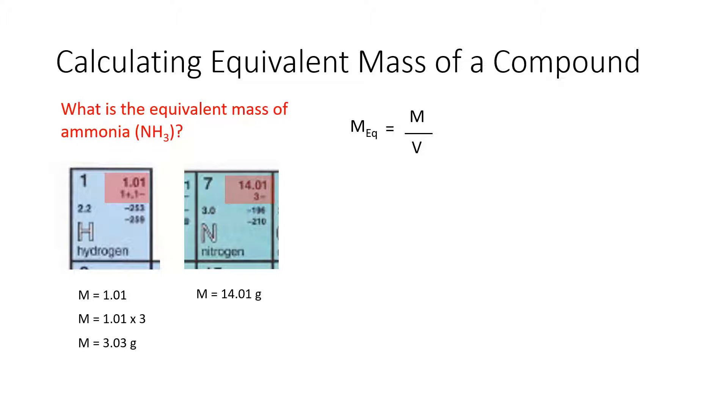What we then do is we go to our equation and we find the mass of one equivalent by taking the molar mass of the compound and dividing it by its valence. We know from adding up that the molecular mass of ammonia NH3 is 17.04 grams. We also know that its valence would be three because if nitrogen is three and we have three hydrogens we end up with three as being the valence for the stable amount. We then take our molar mass for the compound, 17.04 grams, and divide it by that valence of three which gives us a molar equivalent mass of the compound of ammonia at 5.68 grams.